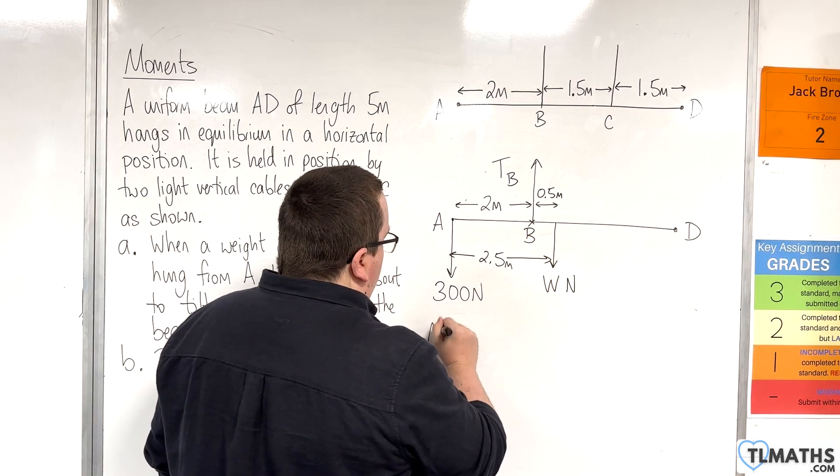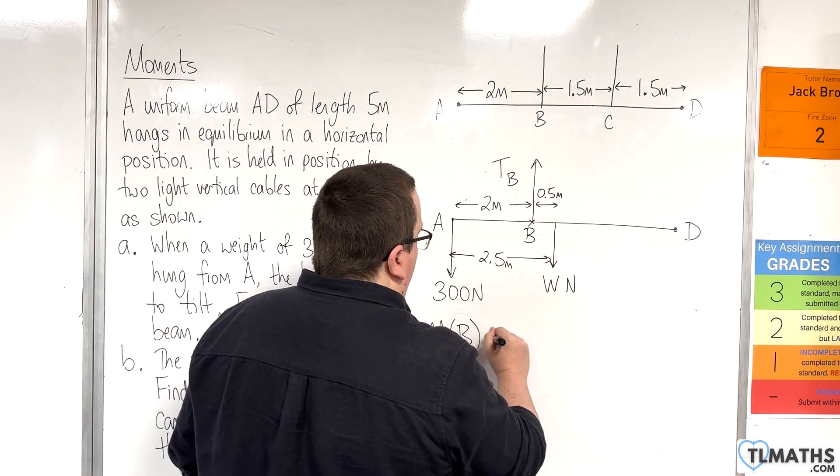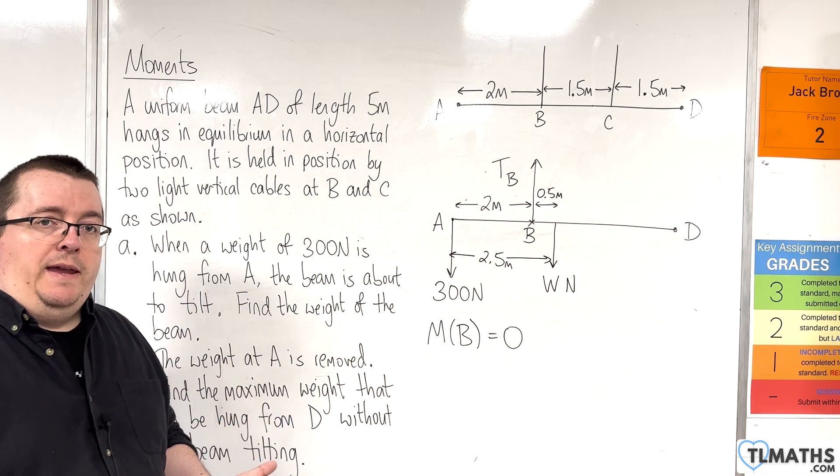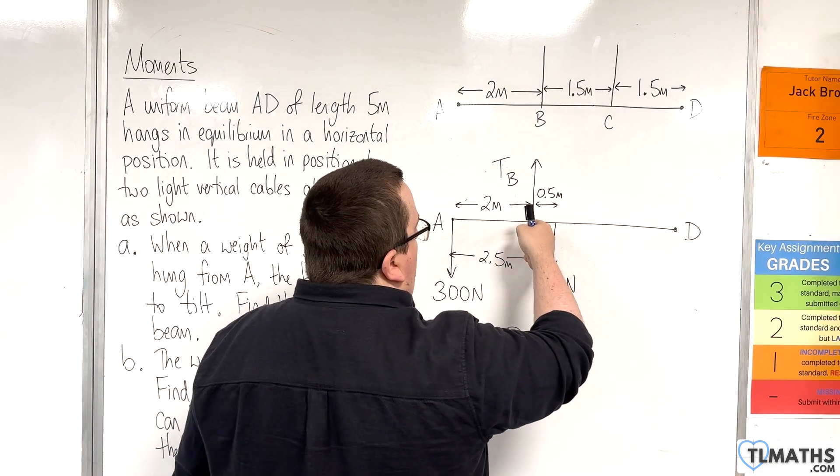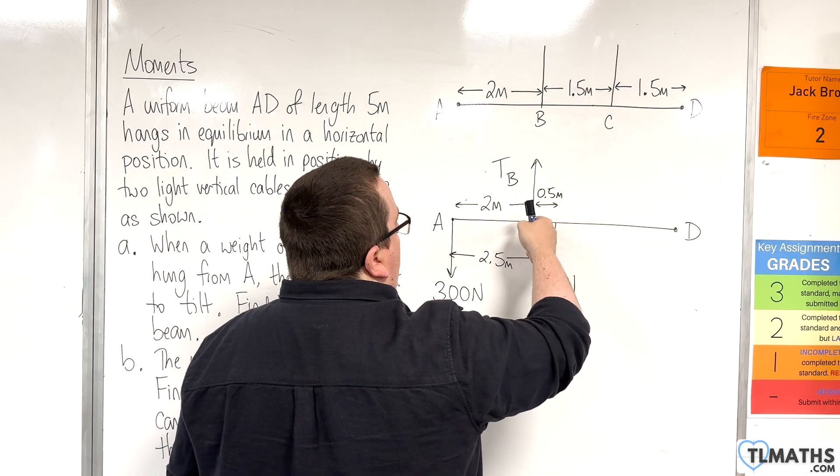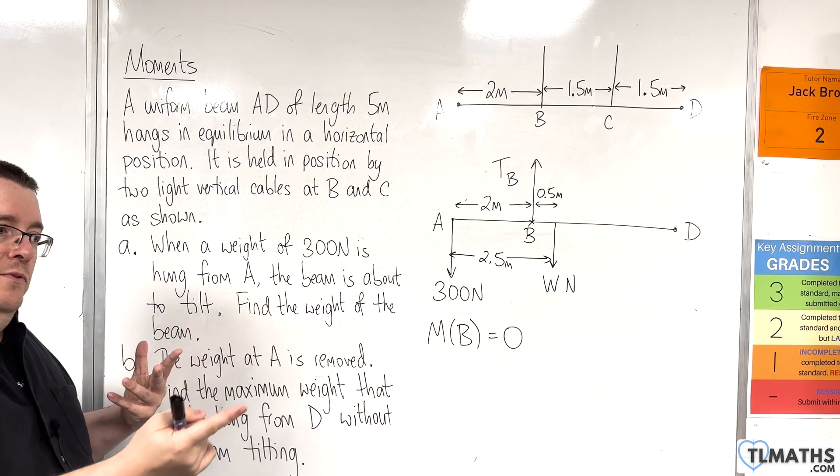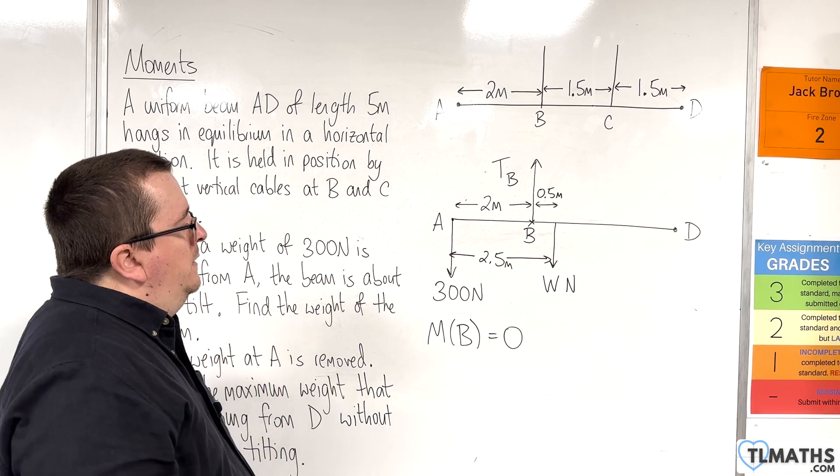Now the reason why I would take moments about point B is because that means that I don't need to consider the tension at B. Because I'm taking moments about that point, I don't need to consider that tension, because the distance from B to the tension is zero.